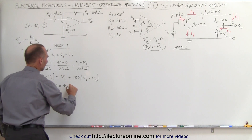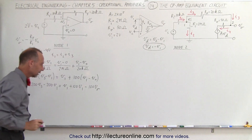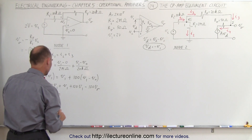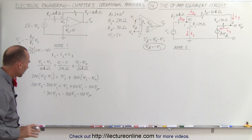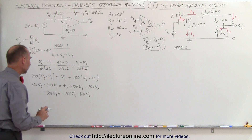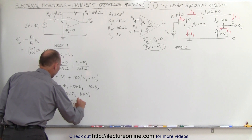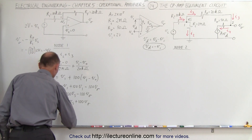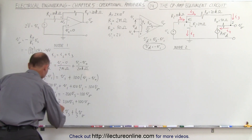Expanding: 200V_S minus 200V_1 equals V_1 plus 100V_1 minus 100V_O. Moving all V_1 terms to one side gives minus 301V_1 equals minus 200V_S minus 100V_O. Approximating 301 as 300 and dividing by 300, V_1 is approximately equal to (2/3)V_S plus (1/3)V_O.